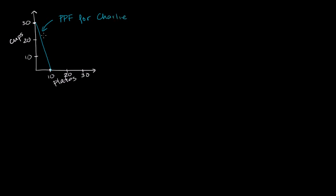Now let's think about his opportunity cost. Because this is a linear PPF, his opportunity cost does not change — the slope of this line is not changing. It's not that bow-shaped curve we saw for the hunter-gatherer, so it's a fixed opportunity cost at any point along this production possibilities frontier. If he's producing 30 cups, what is his opportunity cost of producing 10 plates? Well, to produce 10 plates, he's going to have to give up those 30 cups.